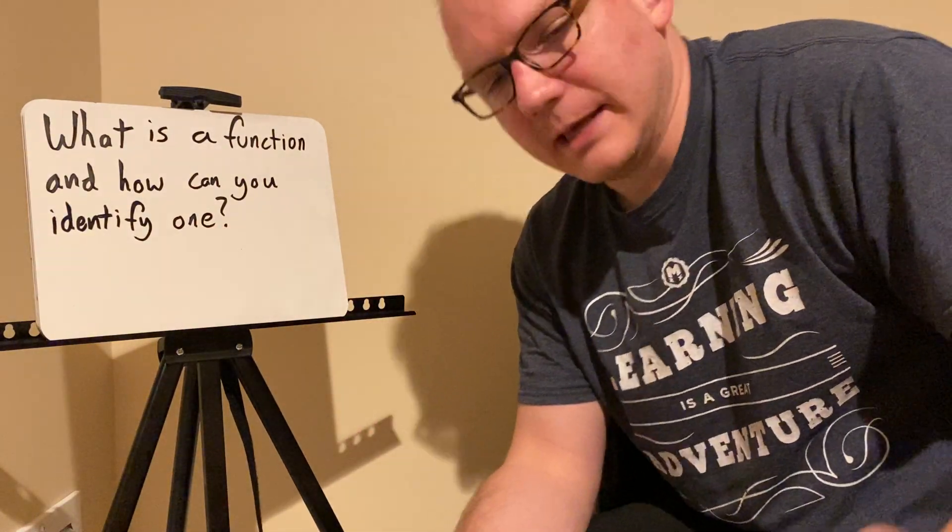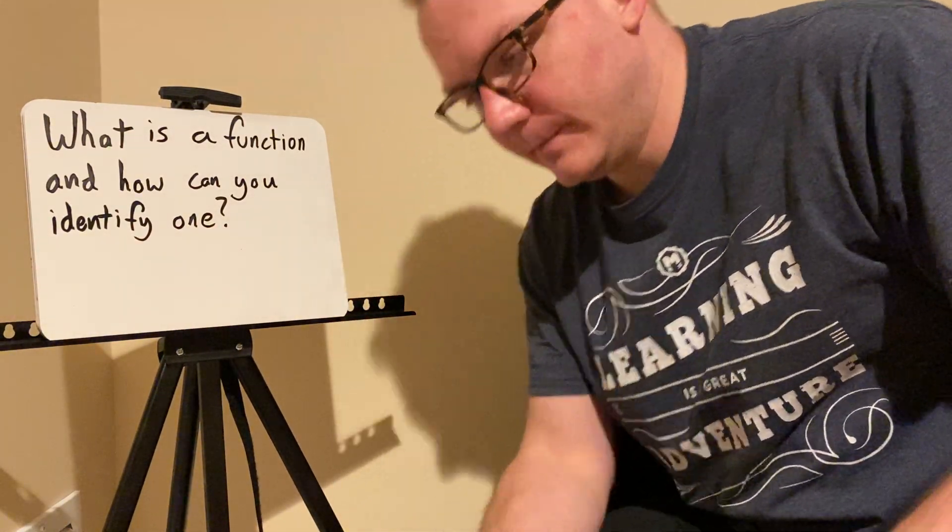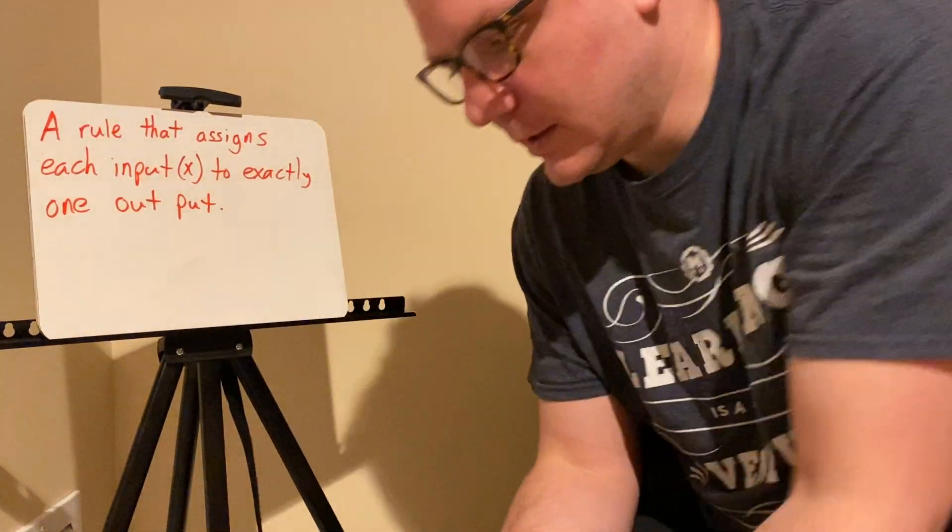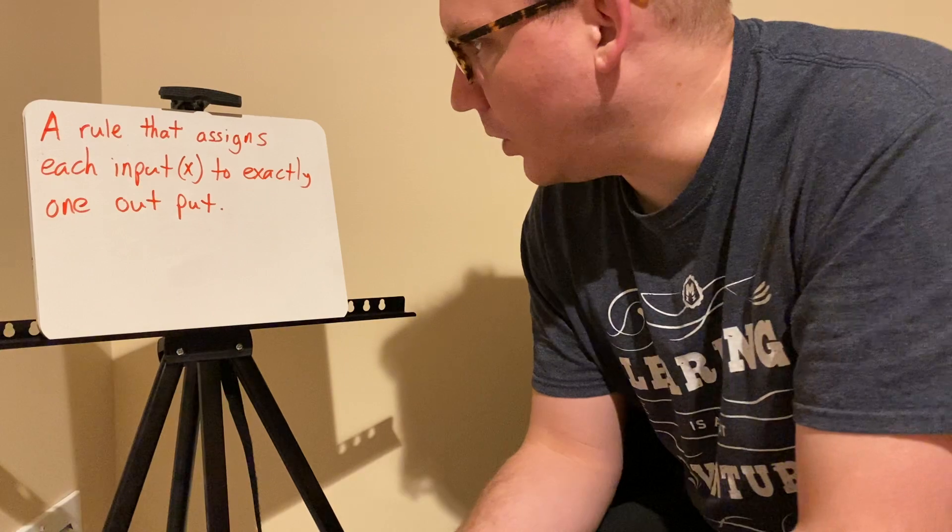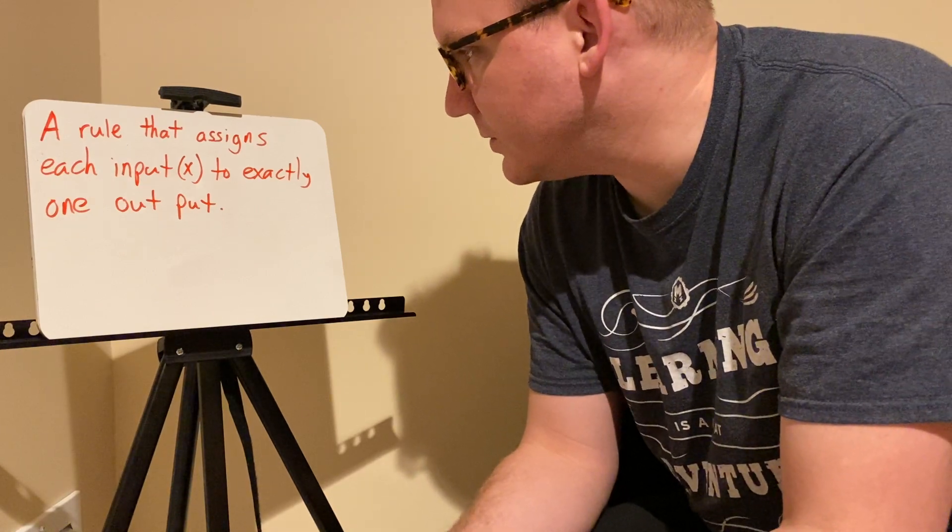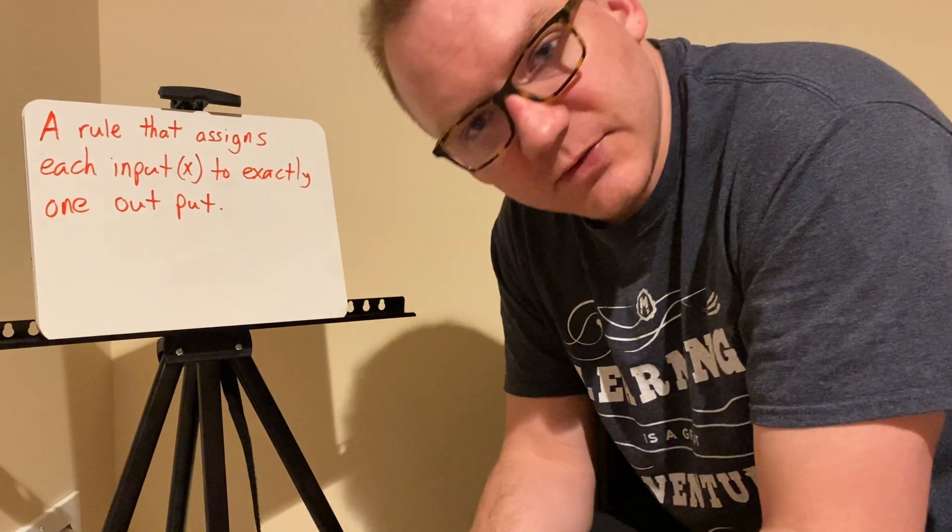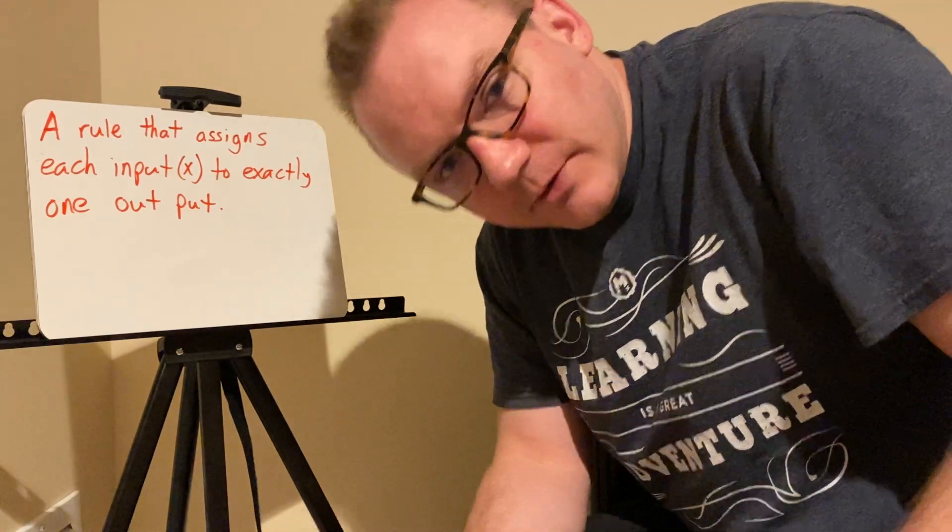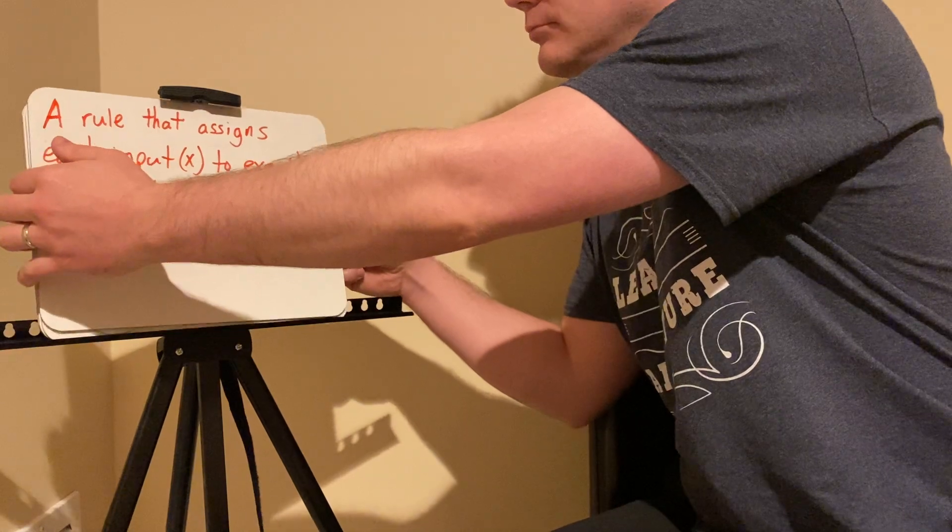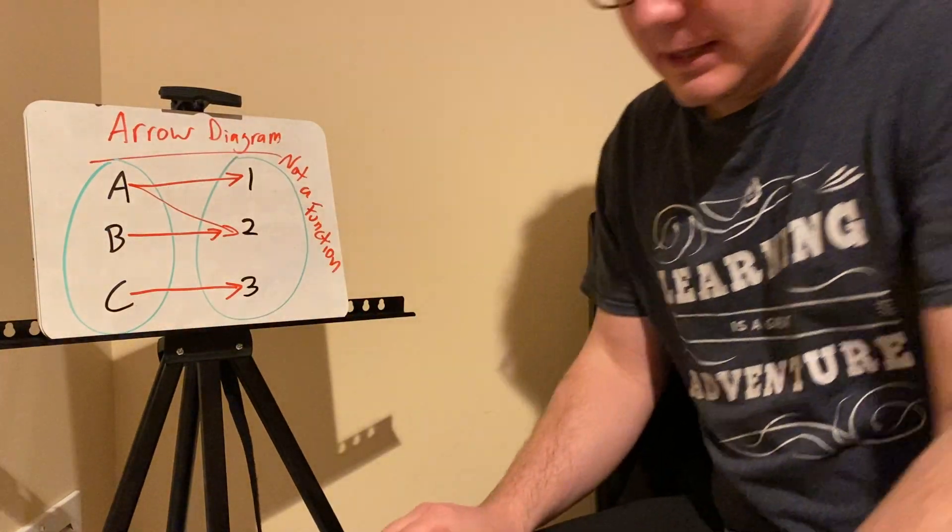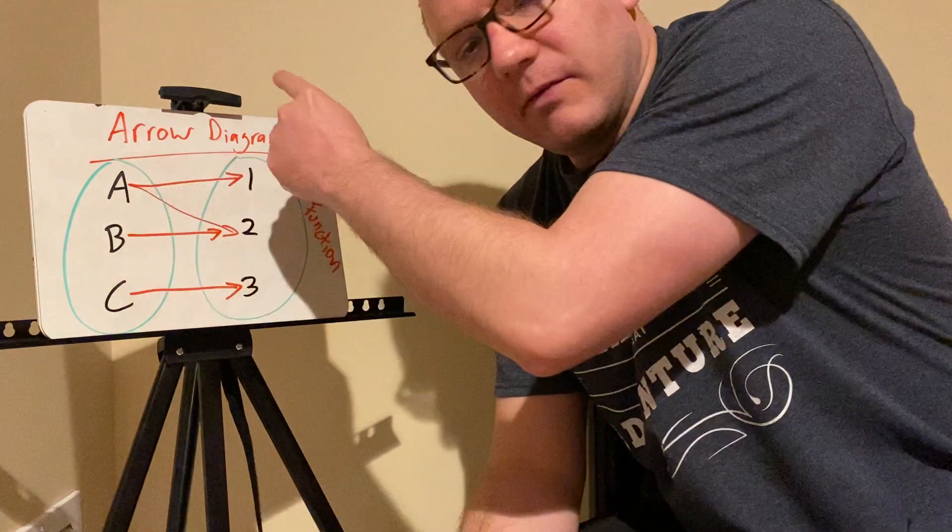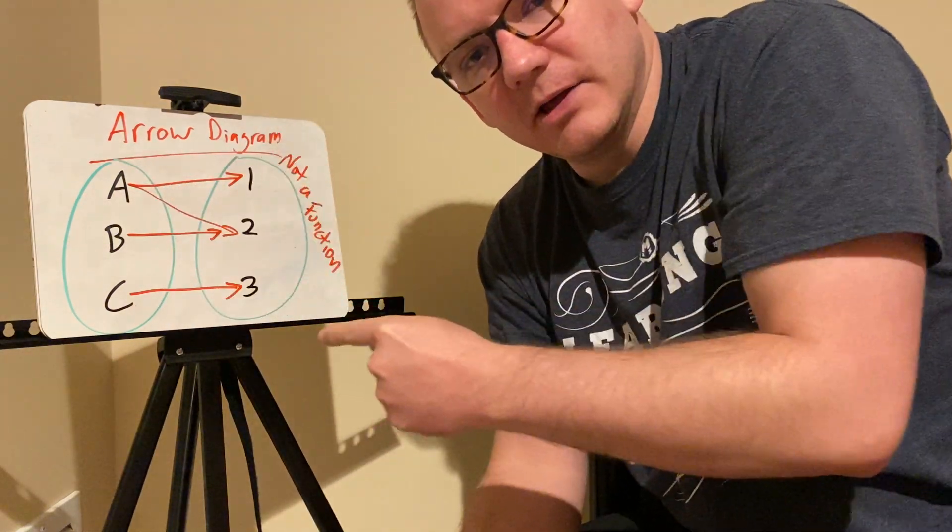What is a function and how can you identify one? Well, a function is a rule that assigns each input to exactly one output. You've seen a lot of this with linear equations. Almost all linear equations are functions. It means that basically for each x value you have only one y value assigned to it.